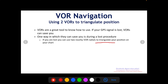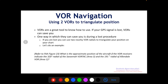Let's do an example of something you'll see on the FAA written exam. It says refer to figure FAA figure 23. What is the approximate position of the aircraft if the VOR receivers indicate the 320 radial of the Savannah Vortac, area 3, and the 191 radial of Allendale VOR, area 1? So basically, you're flying around and Savannah Vortac is nearby, and Allendale VOR is nearby.